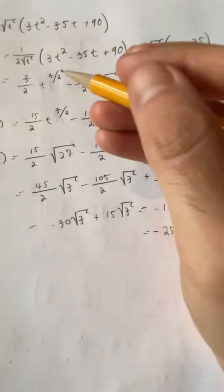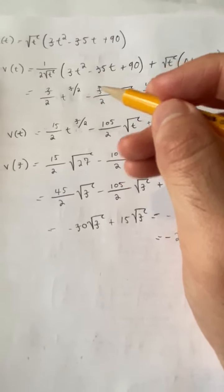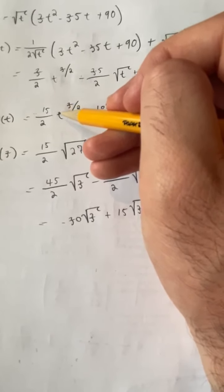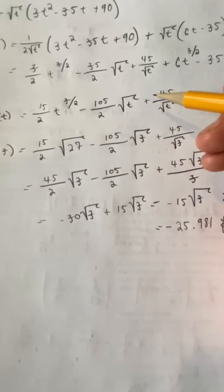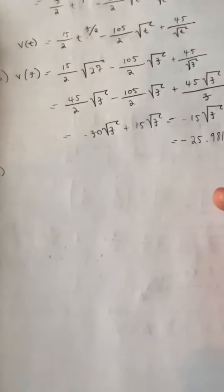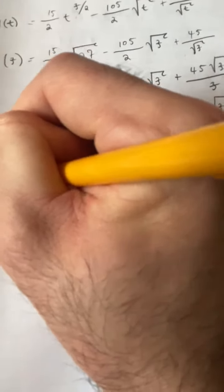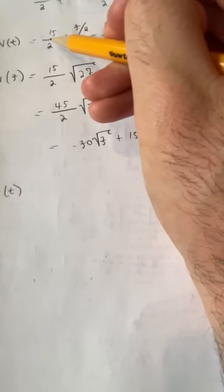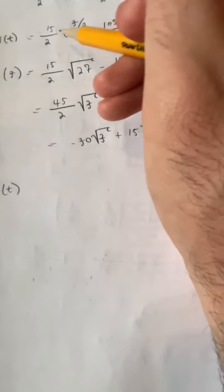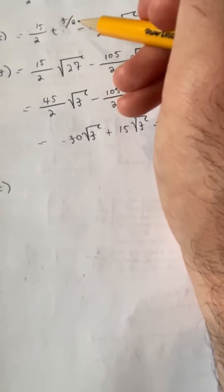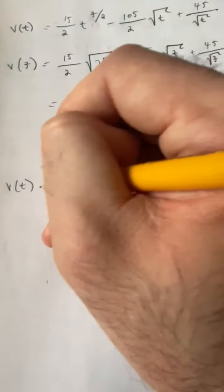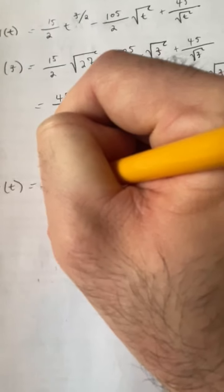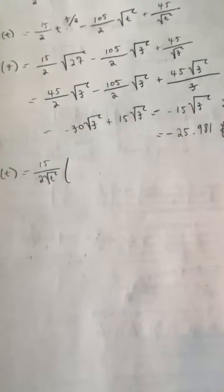That's one way to do it, but there's a more digestible approach. Instead, we factor out 15-halves and also t to the negative one-half — so we factor out 15 over 2 radical t from everything. The question is what's left inside after factoring.